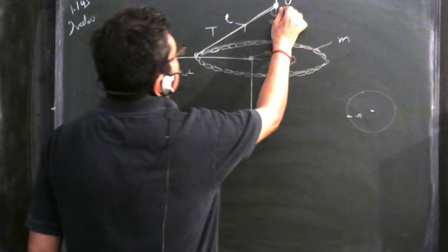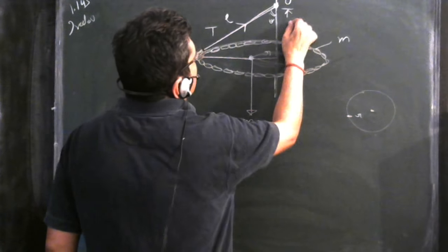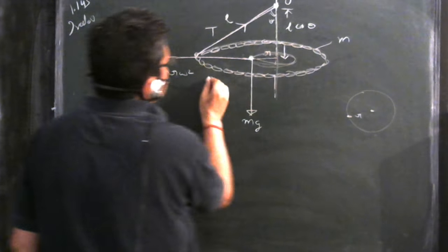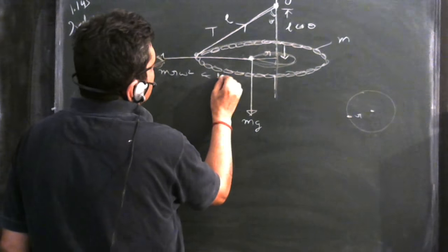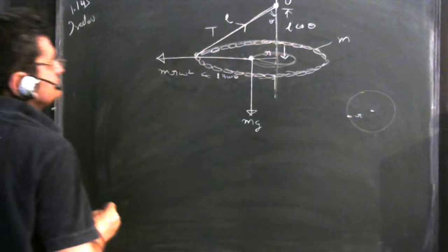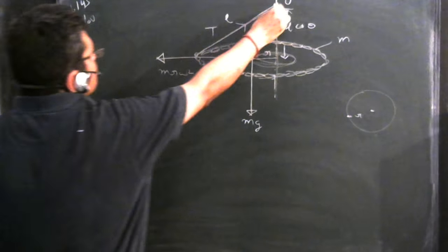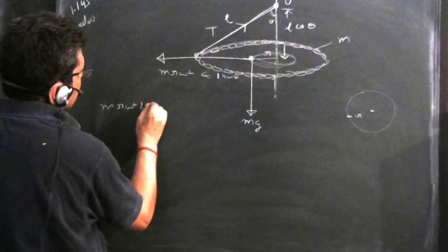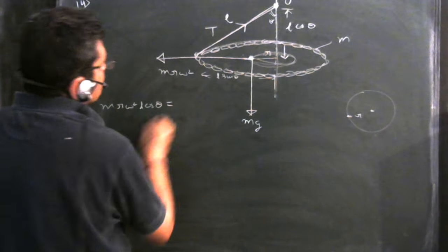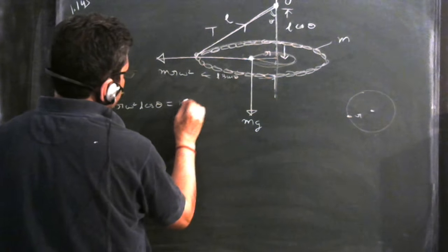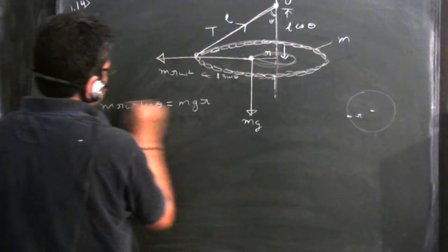If this is L, this will be L cos theta and this would be L sin theta. So the moment about this would be MR omega square L cos theta equals MgR. This is one equation.